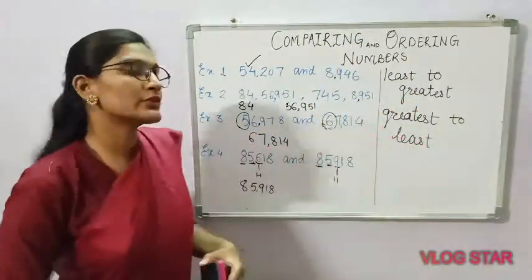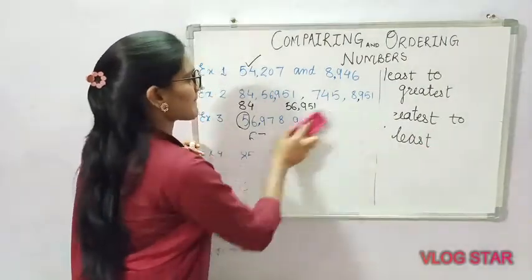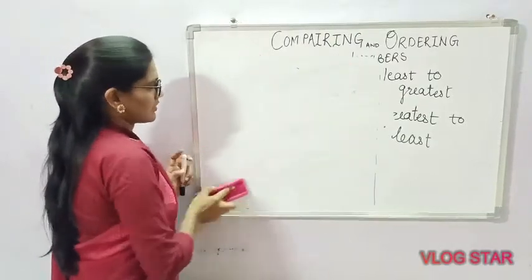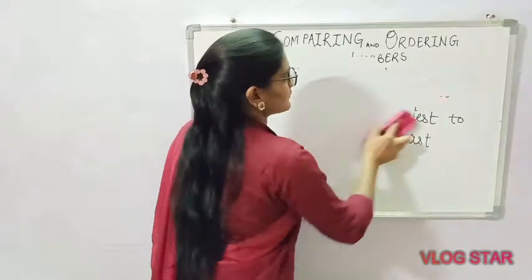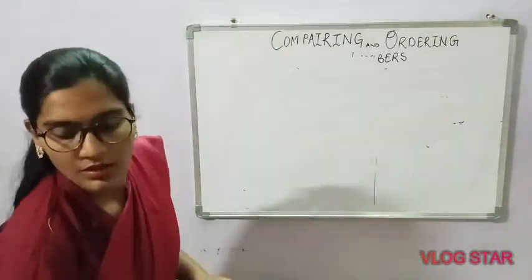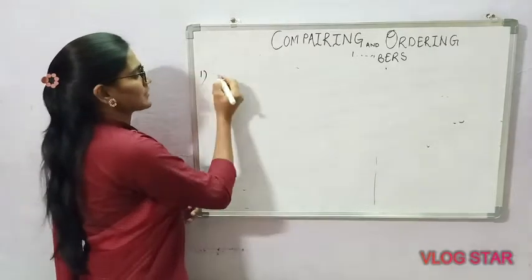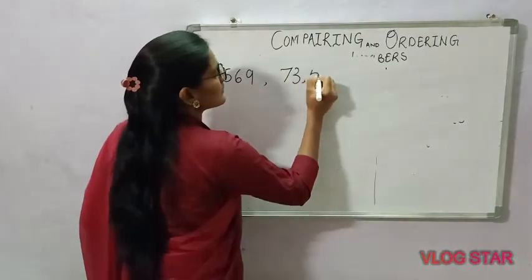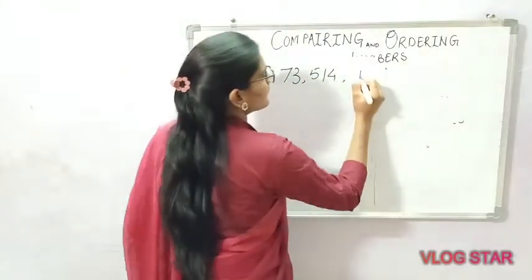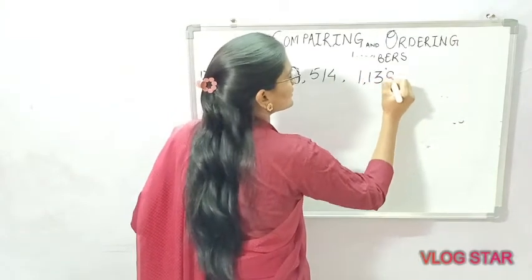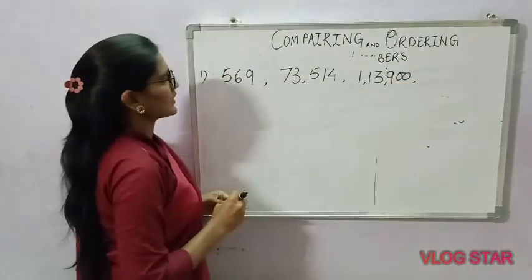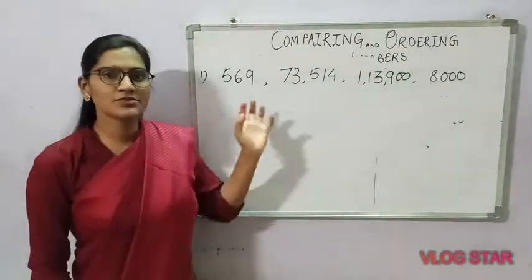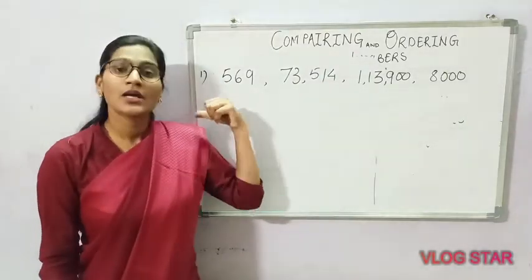Let's take an example of how to arrange numbers. I am going to write five to six numbers: 569, 514, 1,13,900, and 8,000. Now you have to write these numbers in least to greatest order, which means you have to write them in ascending form.